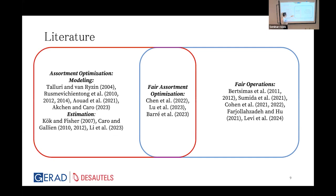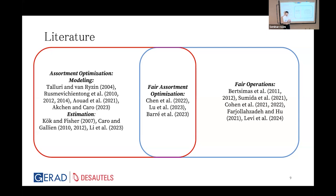Our research sits at the intersection of two major lines of research: assortment optimization and fair operations — the latter has recently gained momentum. Existing work on fair assortment optimization is mostly concerned with price fairness and focuses on a platform problem, such as Amazon ensuring different sellers have a fair chance. Our question is different: it's about availability fairness among customer groups, not price fairness.